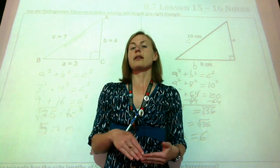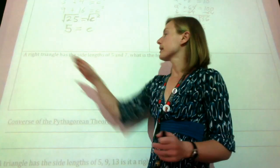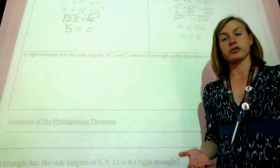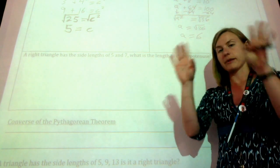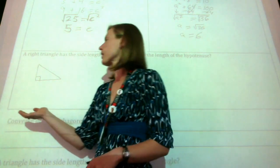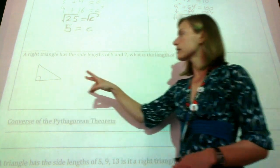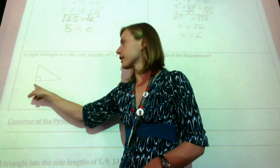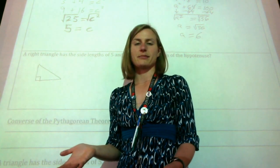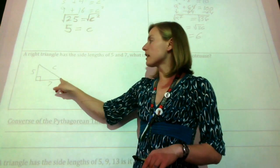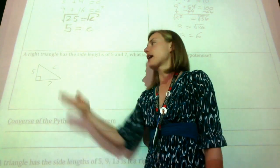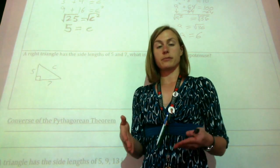Now let's look at a similar problem but one where they don't give us a picture — just a word problem. It says: a right triangle has side lengths of 5 and 7. What is the length of the hypotenuse? I like starting by drawing a picture so I can prepare myself mentally. So let's draw a right triangle — it doesn't need to be fancy, any right triangle will do. We know two side lengths are 5 and 7, but the hypotenuse is unknown. I'll put 5 over here and 7 down here, and put c on the hypotenuse since that's always c. Then let's dive in and use the Pythagorean theorem to solve.